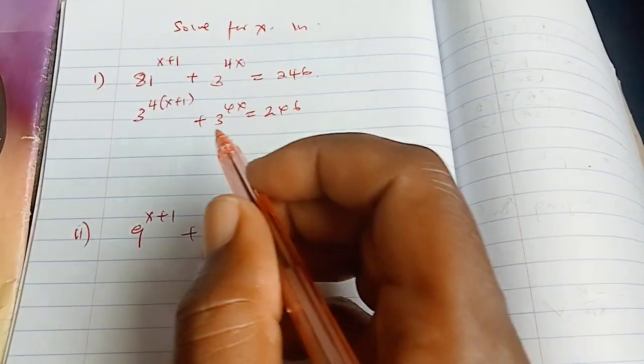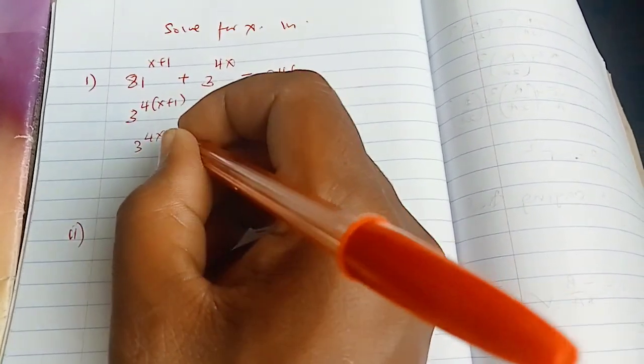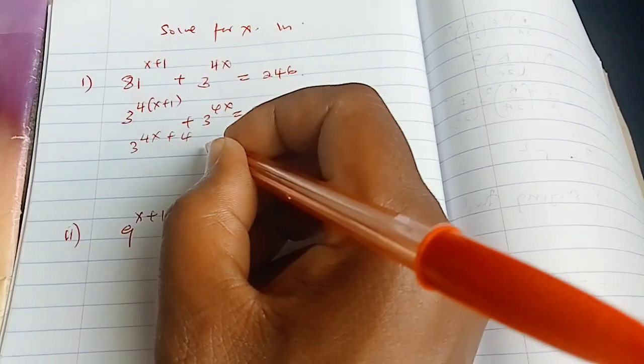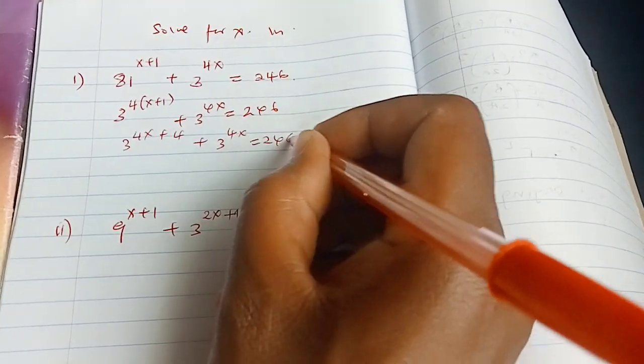So we are going to not interfere with the right hand side and so here we have 3 to the power of 4x plus 4 plus 3 to the power of 4x equals to 246.